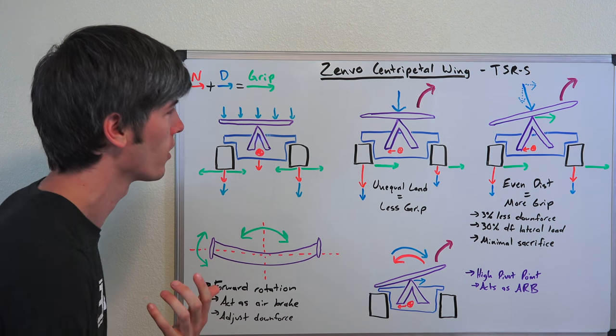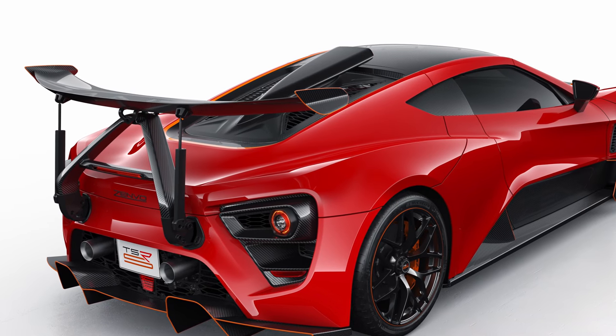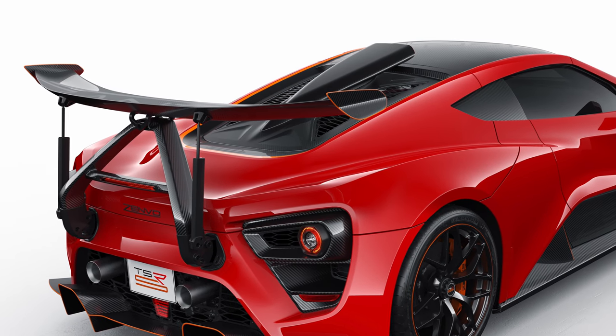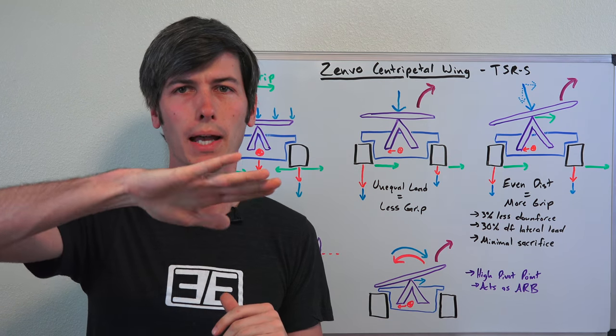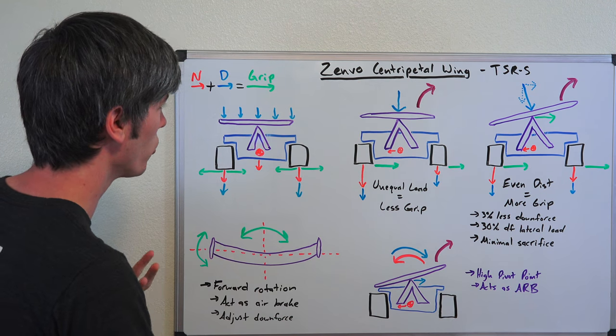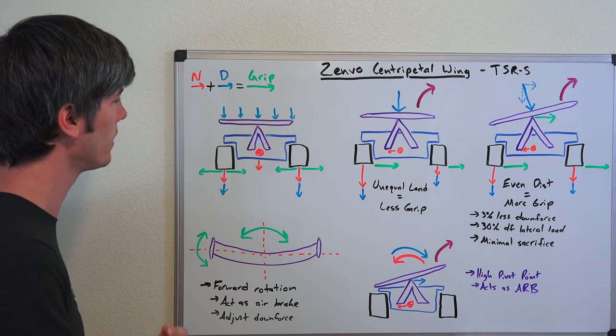So this is a really neat device here, which is a wing sitting on a center pivot point and then there are actuators on either side of that wing which can rotate it either direction. So it can go not only forward back, but side to side and in doing so it can alter how downforce is distributed on the car. So this is a pretty neat idea.